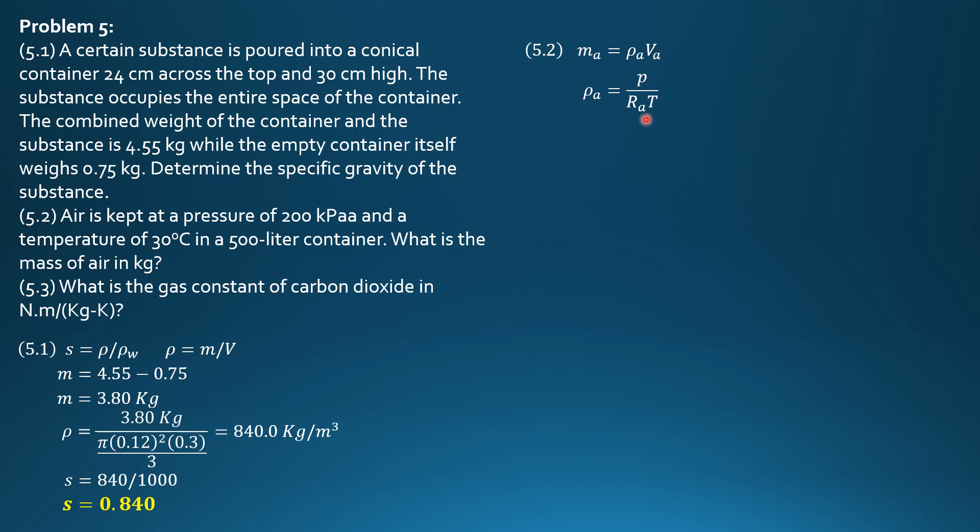The gas constant of air is 287 Nm per kg kelvins. The absolute temperature is temperature in degree Celsius plus 273. Then we convert 200 kPa into Pascals absolute. So that would be 200,000 Pa absolute divided by 287 Nm per kg kelvins times 30 degrees plus 273. The density of air is 2.300 kg per cubic meter at that temperature and pressure.